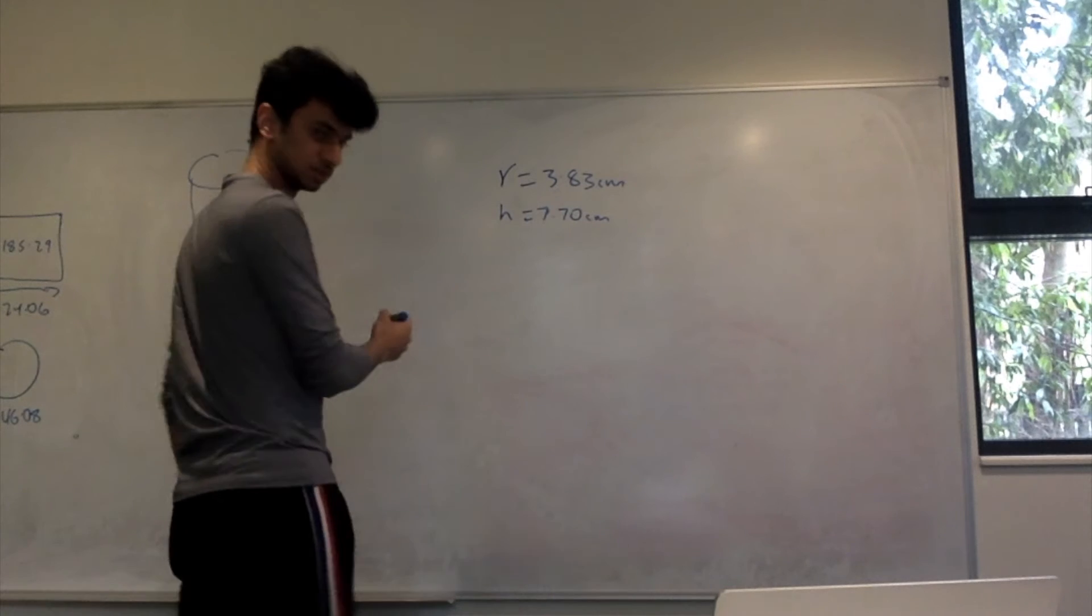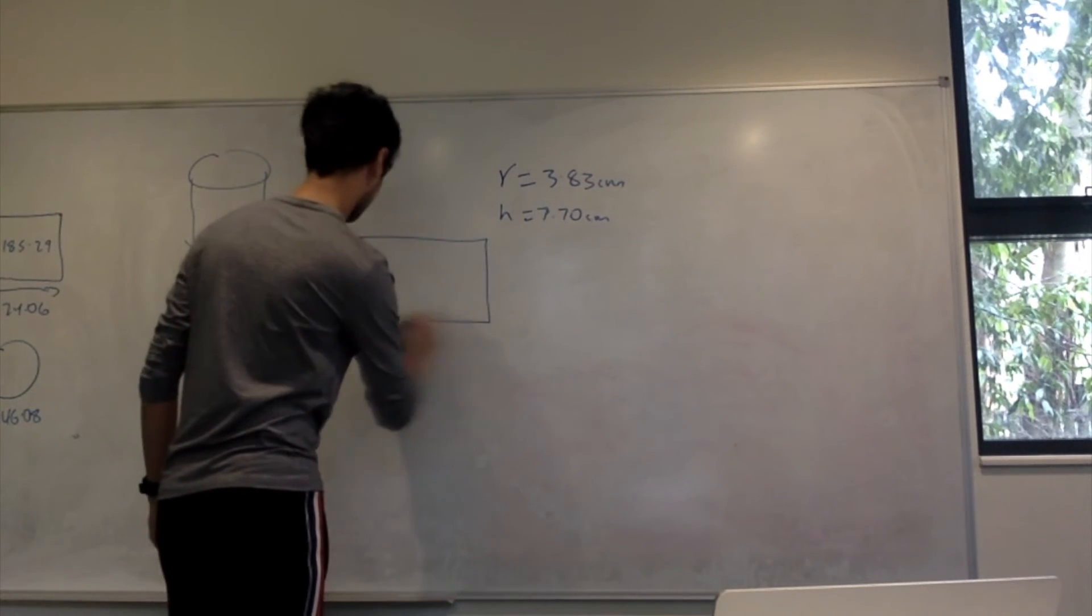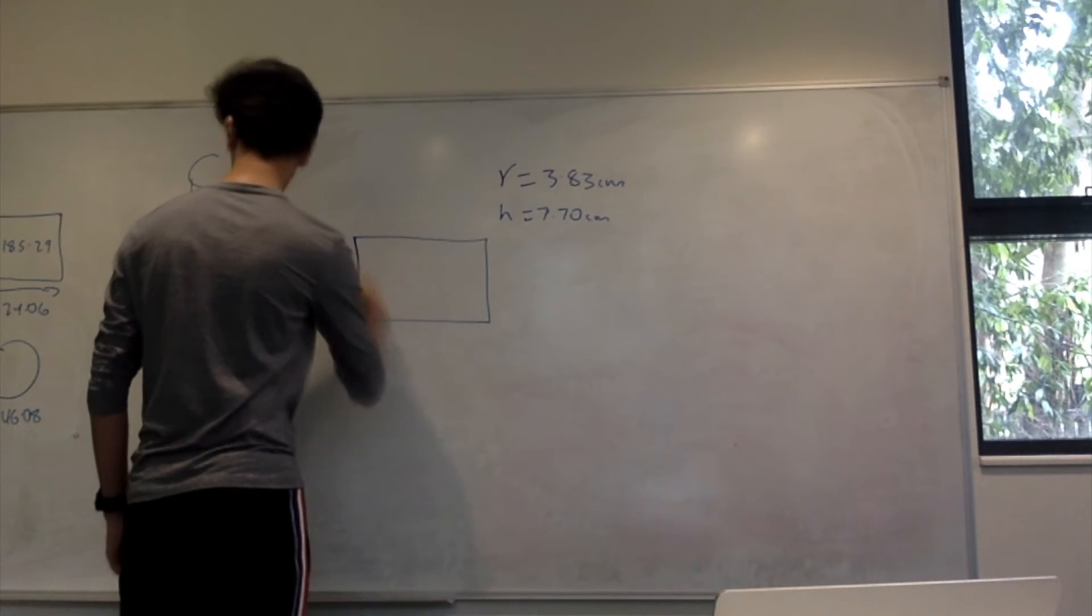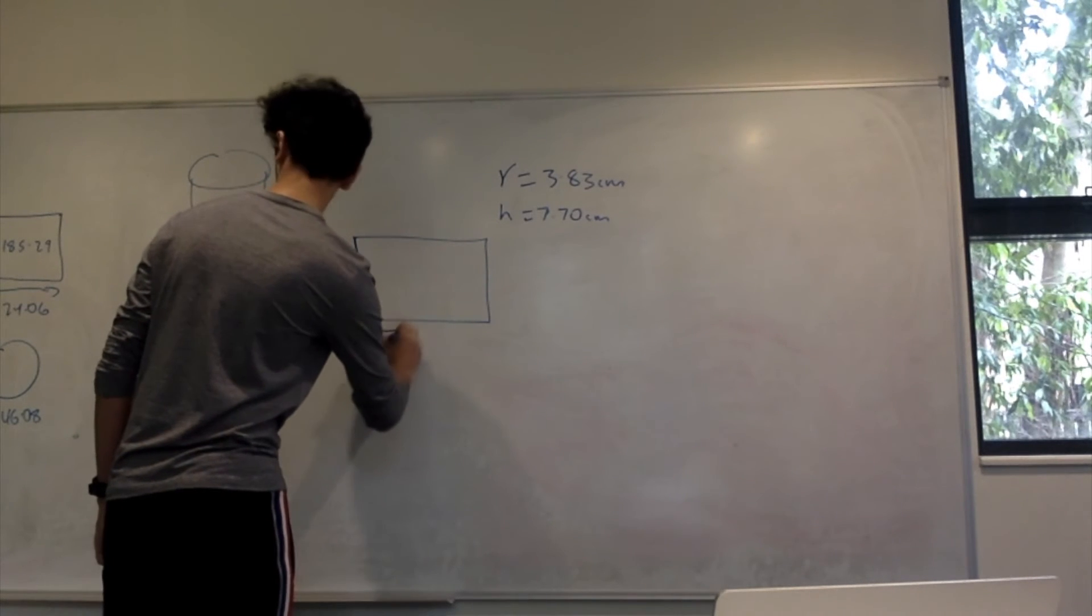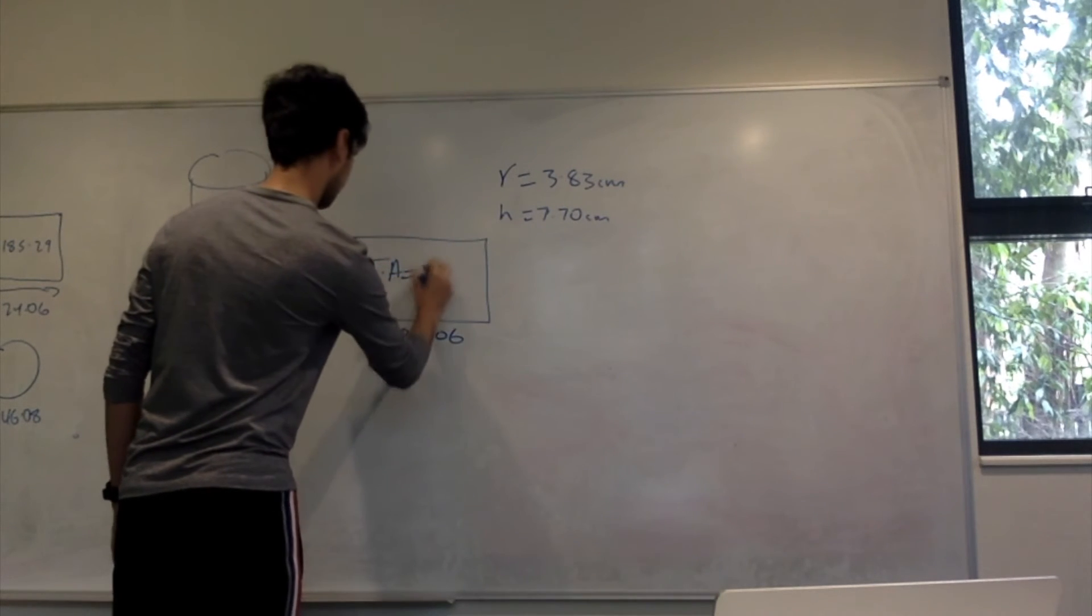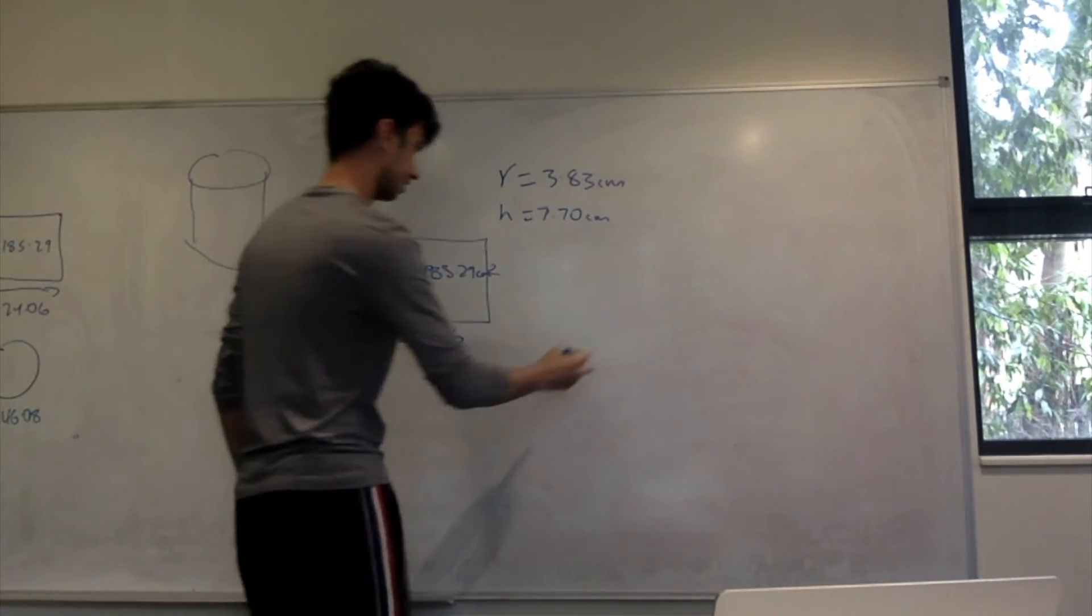Where the height equals 7.70 and the length equals 24.06. The total area will be 185.29 centimetres squared.